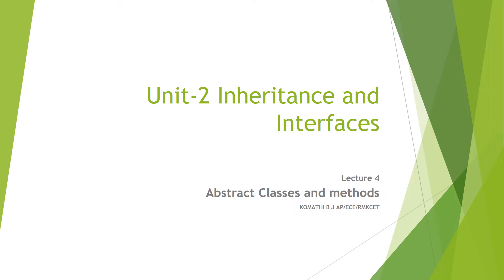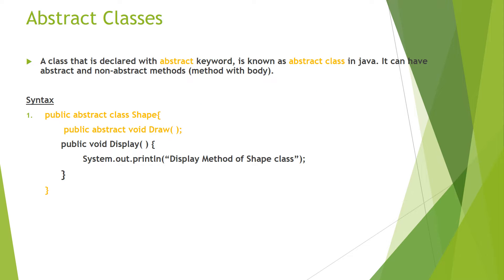Hello everyone, welcome to lecture 4 of unit 2: Inheritance and Interfaces. In this lecture we are going to see what is meant by abstract classes and abstract methods. In previous lectures we saw what is meant by inheritance and the different types of inheritance, each with an example. Now we'll move on to abstract classes.